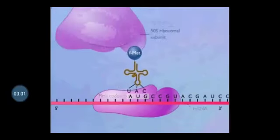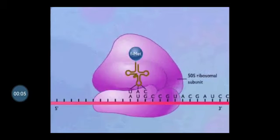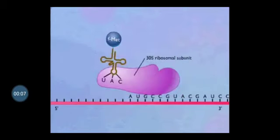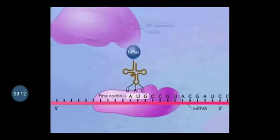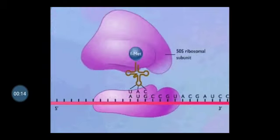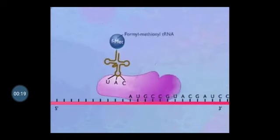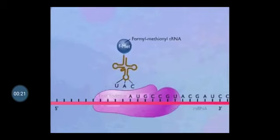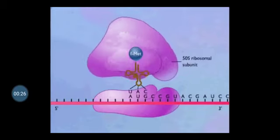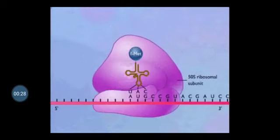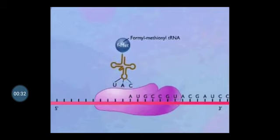Assalamu alaikum. Here I'm discussing translation, which is the synthesis of protein. The main machinery of protein synthesis is the ribosome. It consists of two subunits: a small subunit and a large subunit. In case of prokaryotes, the small subunit is 30S and the large subunit is 50S, while in eukaryotes the small subunit is 40S and the large subunit is 60S.